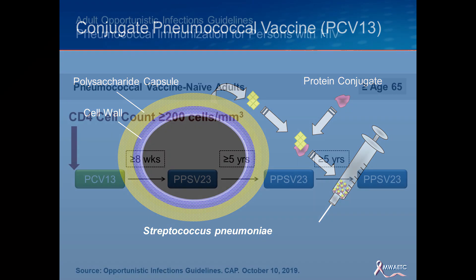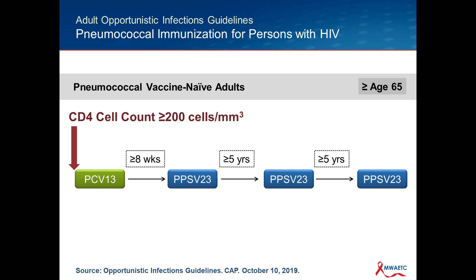Regarding timing and number of shots: the way to remember this for a healthy younger person is PCV13-1-3 — you give one shot of the conjugate vaccine, followed over a person's lifetime by three polysaccharide vaccines. Give the conjugate vaccine, wait eight weeks, give the first polysaccharide, wait five years, give the second polysaccharide, then wait until they turn 65 and give the third. For example, a 30-year-old gets the conjugate vaccine, eight weeks later the polysaccharide, age 35 the next polysaccharide, and at age 65 the last dose.